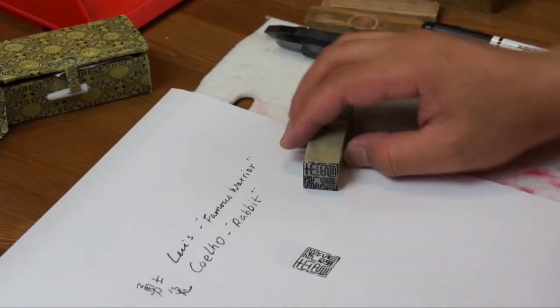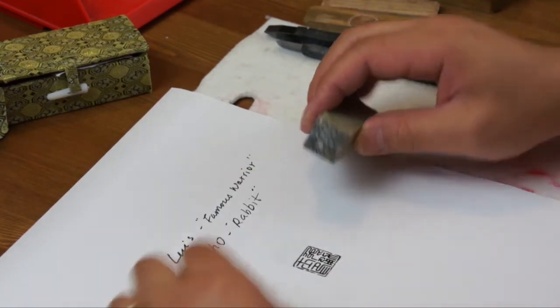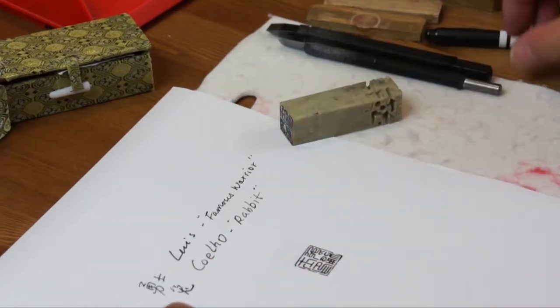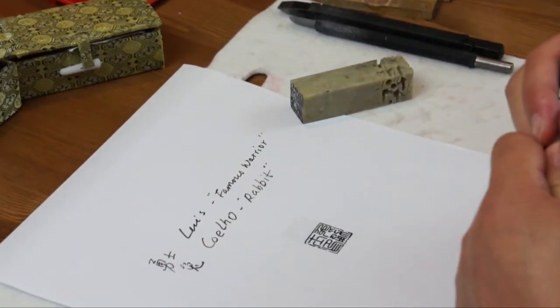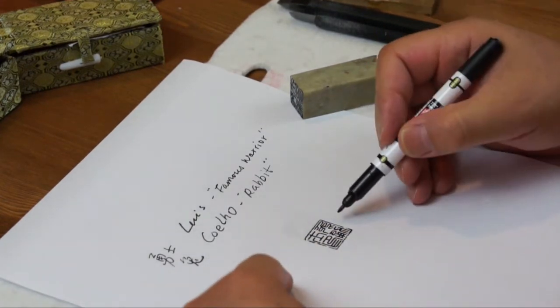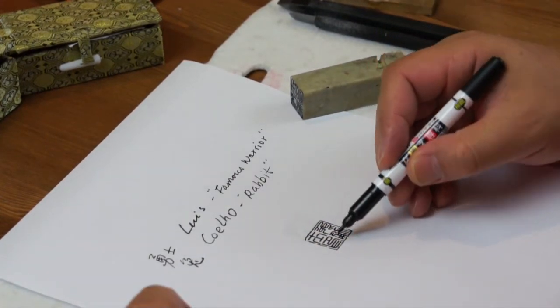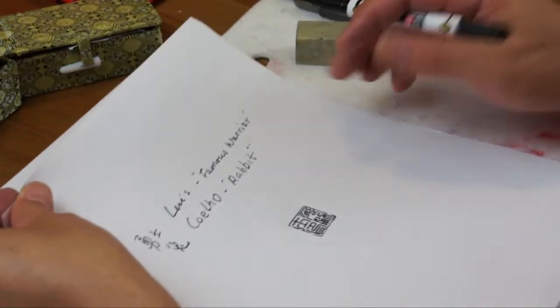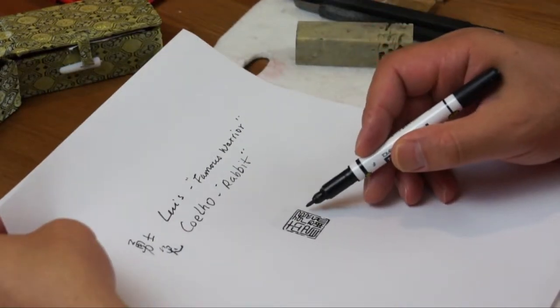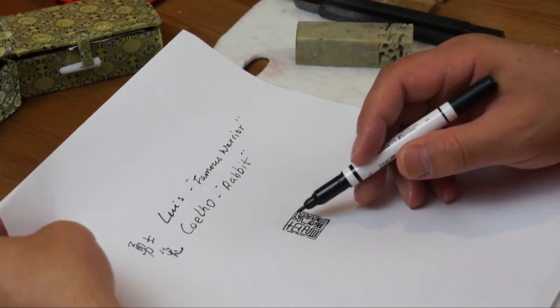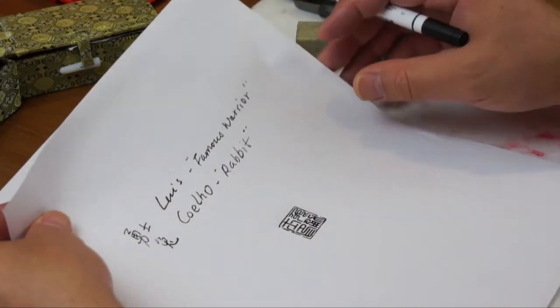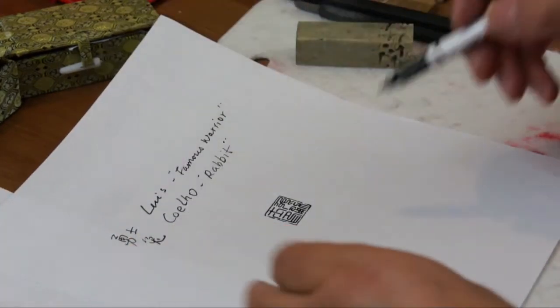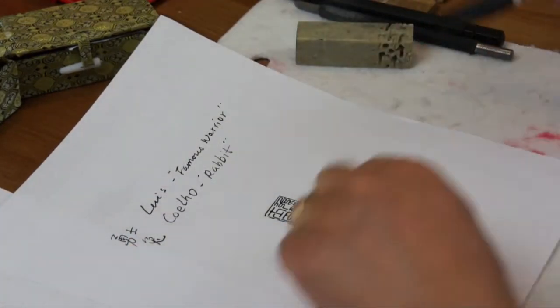It's very interesting to put them together. So Chinese last name usually comes first. So we'll do it in Chinese as Tu Yong Shi, Rabbit Warrior, Famous Warrior. And we always add the character Yin. So it becomes Rabbit Warrior, Famous Warrior, Seal. Tu Yong Shi Yin. That's the translation and the design.